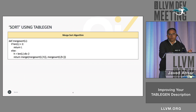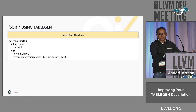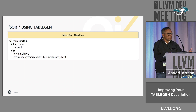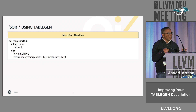What more can you do with TableGen? Can you do merge sort? Why would you want to do merge sort? But the idea is that you use these idioms and apply them in your own case.